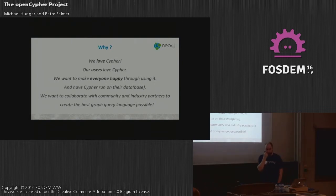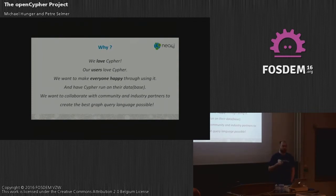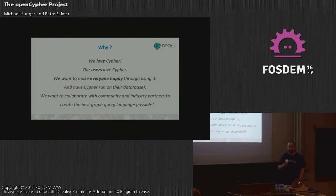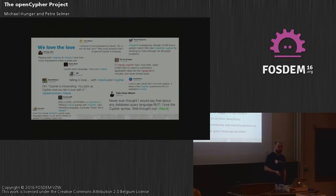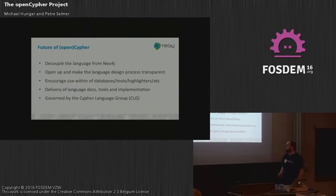Cypher is actually not just good for graph data querying and updates — it's also good for expressing other things. For instance, Chris created a graph data generator that uses Cypher with a slight extension to represent data models for generating test data. Martin used a Cypher variant to express test scenarios and assertions on end graphs. There's also a similar framework that uses Cypher patterns to test against Cypher. We want to collaborate with everyone to create really cool tooling.